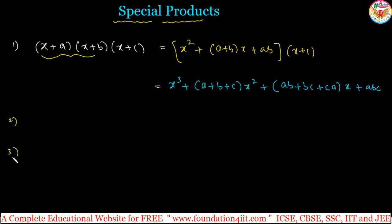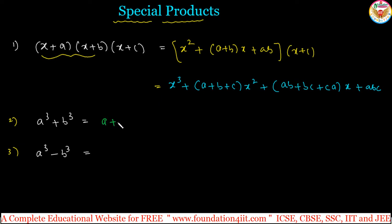Two more important formulas: a cubed plus b cubed, and a cubed minus b cubed. Do not get confused — a plus b whole cube and a minus b whole cube we discussed previously. Now, a cubed plus b cubed equals (a+b)(a squared minus ab plus b squared).